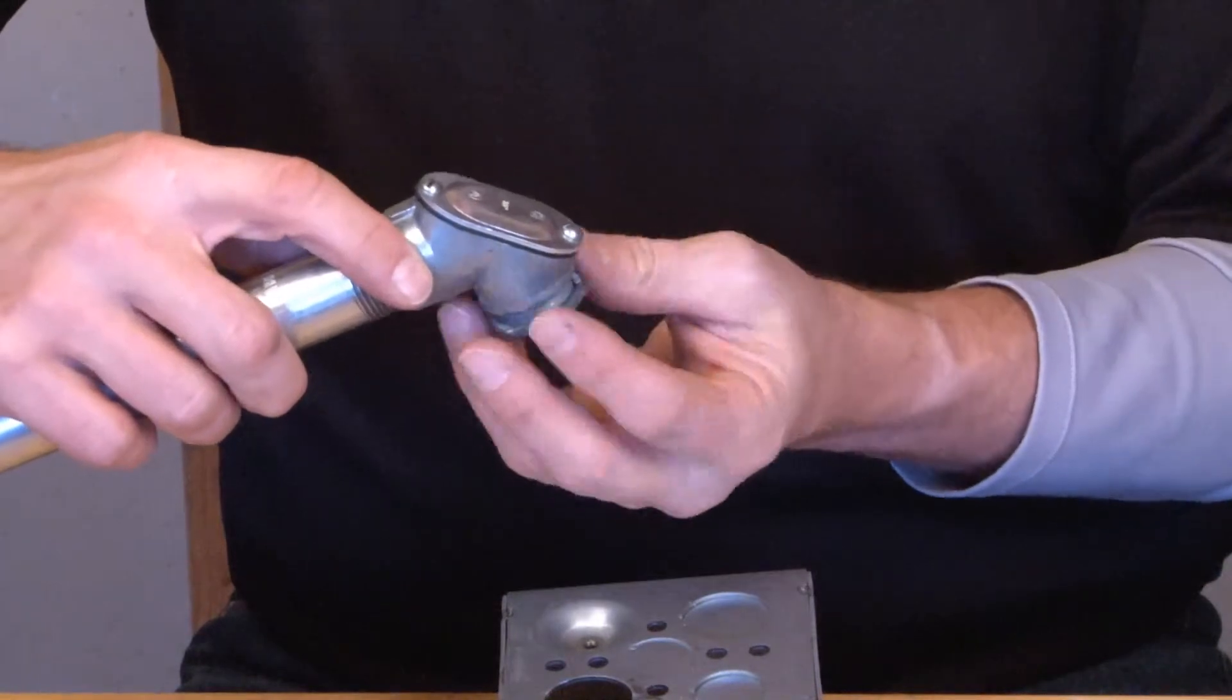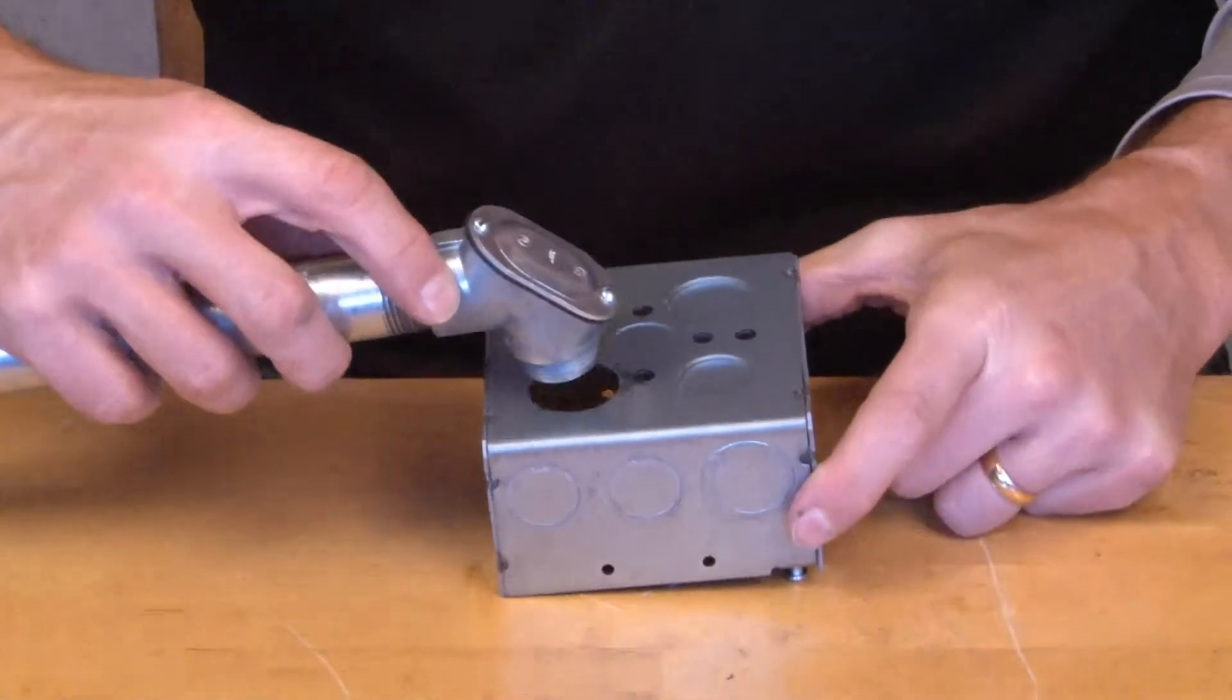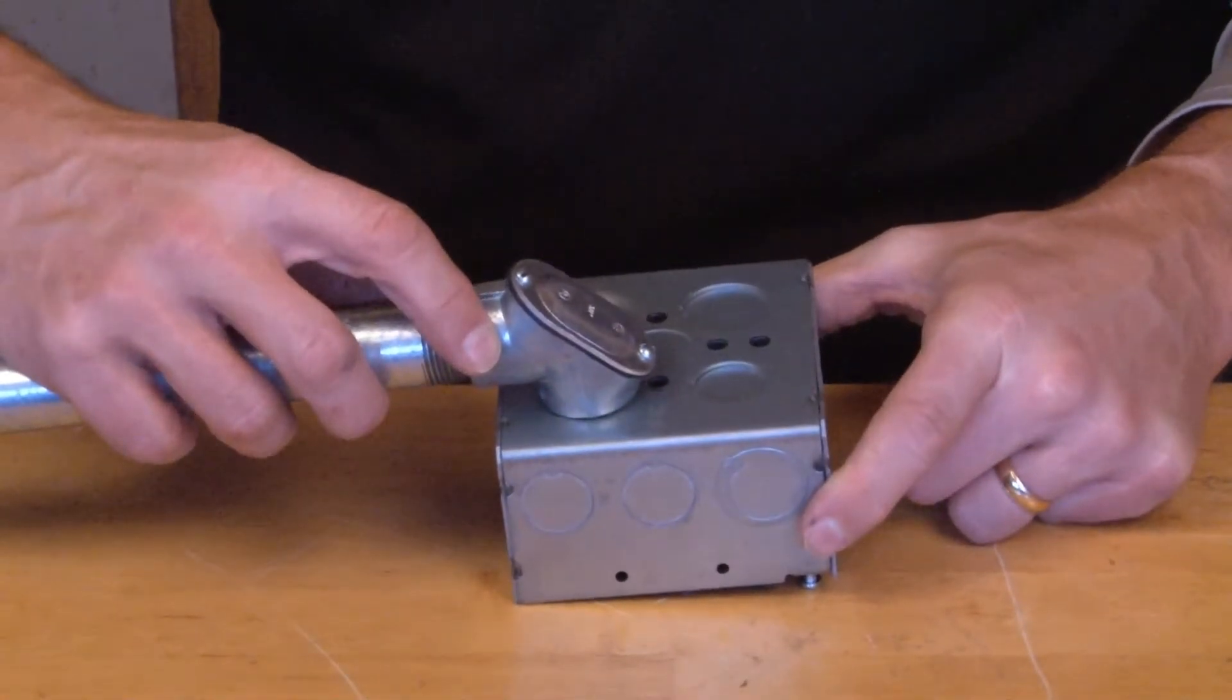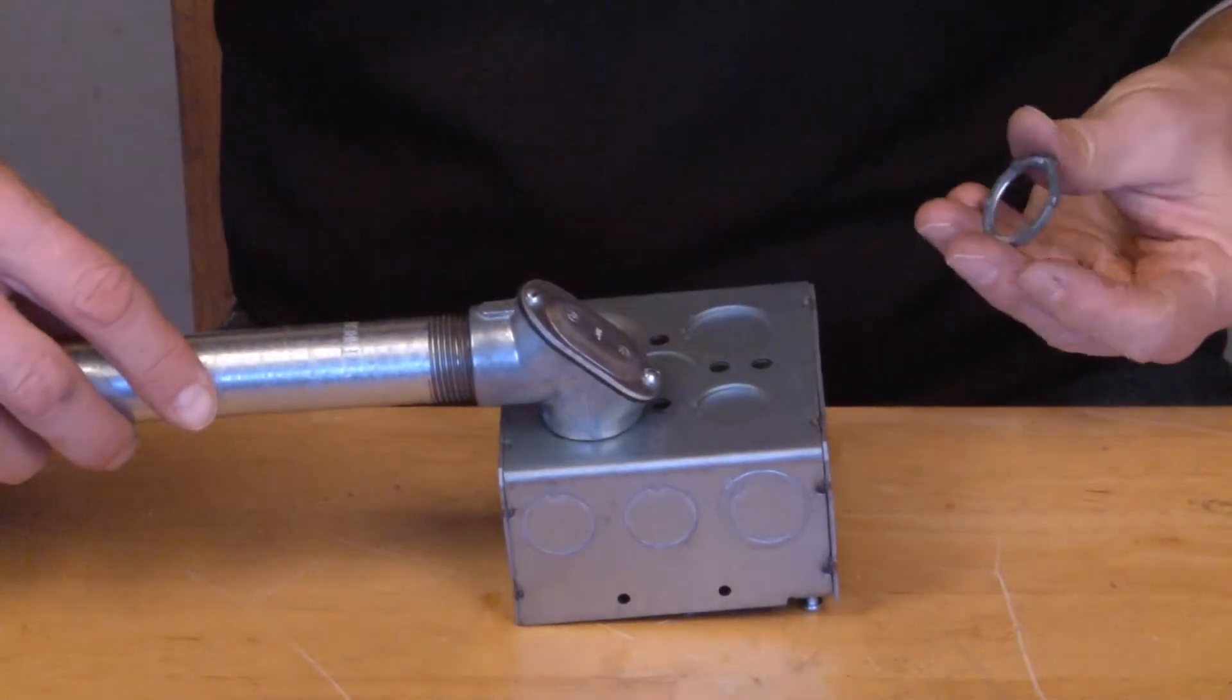Take off the lock nut and then attach your assembly directly to the 1 inch box knockout. At this point, you have your conduit and fitting attached to your junction box.